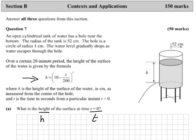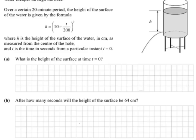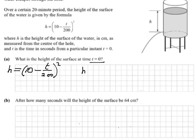We write down h equals 10 minus t over 200, all squared. Putting in t equals zero, it becomes h equals 10 minus zero over 200, all squared, which works out to be 10 squared, giving h equals 100 centimetres.